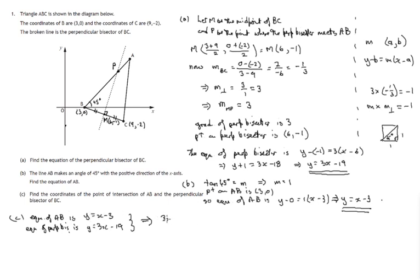They're both equal to y, so we've got 3x minus 19 would be equal to x minus 3. Let's subtract x from both sides and add 19 to both sides. And that will give us 2x equals 16, therefore x equals 8. And we put x equals 8 in y equals x minus 3. We'll choose that, it's a simpler equation, the first equation there, to get y equals 8 minus 3, which is 5.